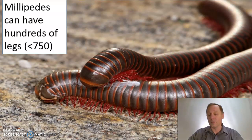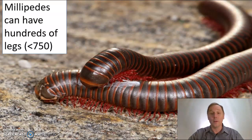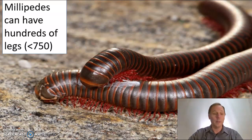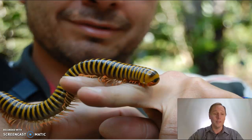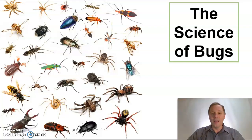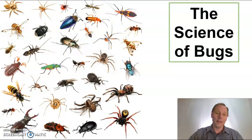Millipedes are the kings of having legs. The biggest number of legs I found on the internet was 750 legs on a millipede. And here we see this guy playing with a really dangerous millipede. Thank you for joining me today in the creepy crawly world of the science of bugs. I'll see you next time. Bye-bye.